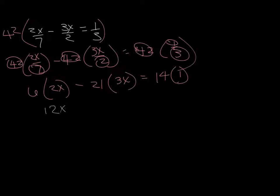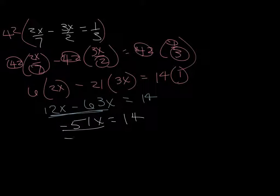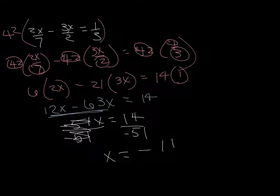You can get 12x minus 63x equals 14. We're going to subtract those two. 12 minus 63 is negative 51x equals 14. Divide both sides by negative 51. Those cancel, and x is negative 14 over 51.